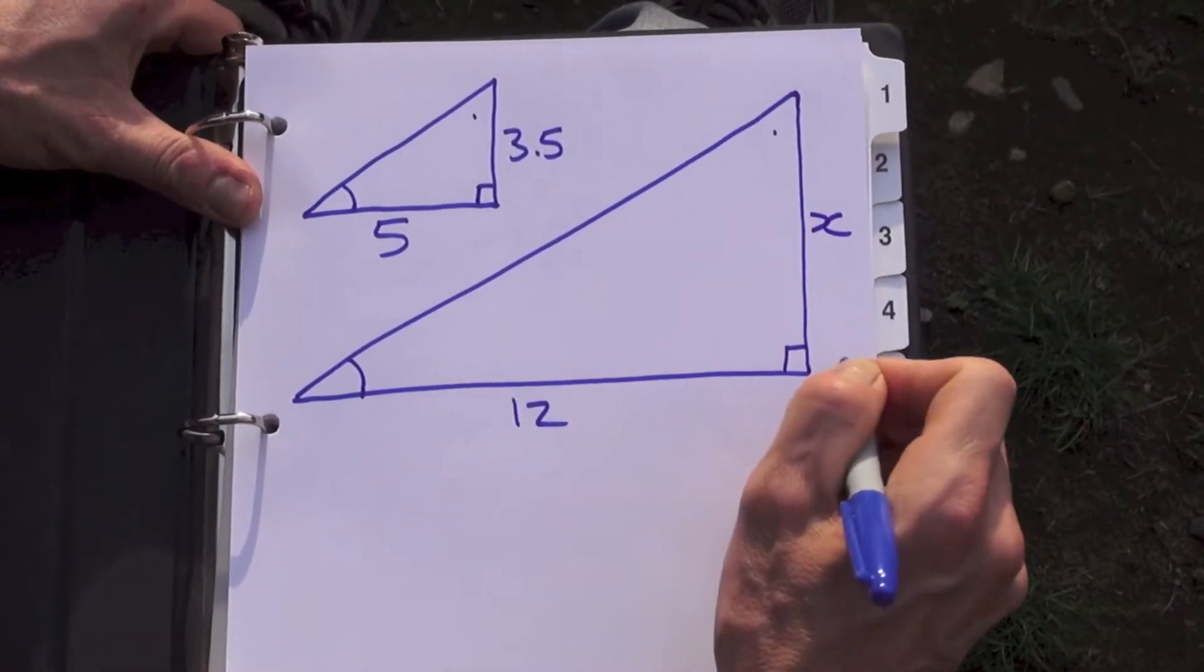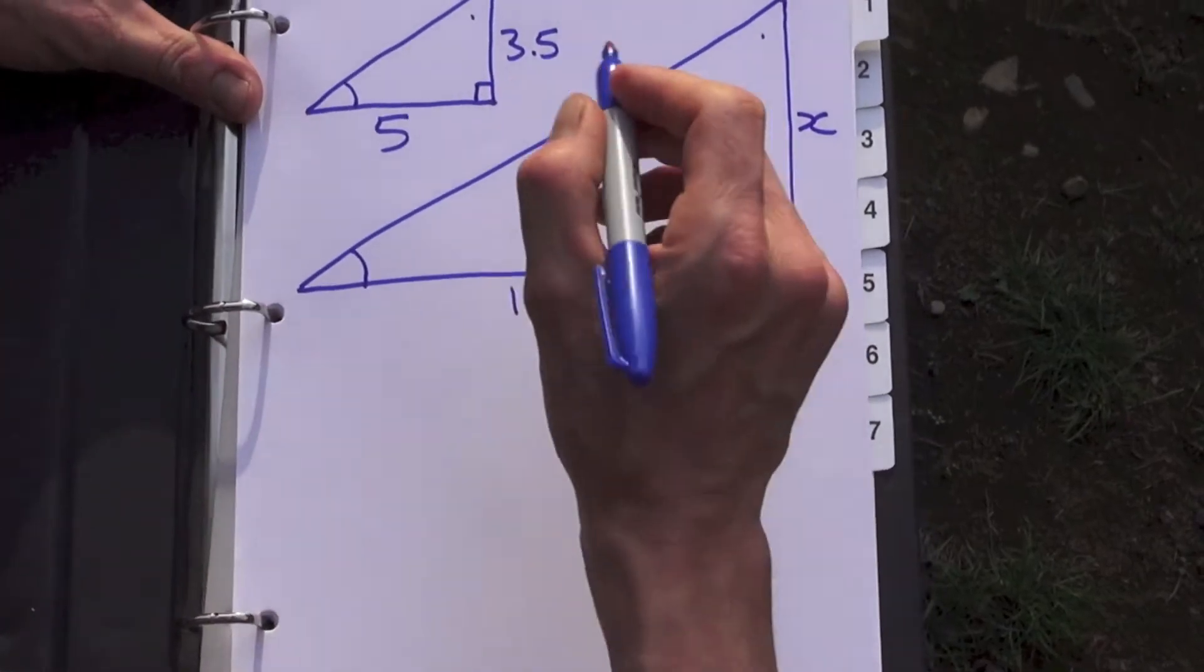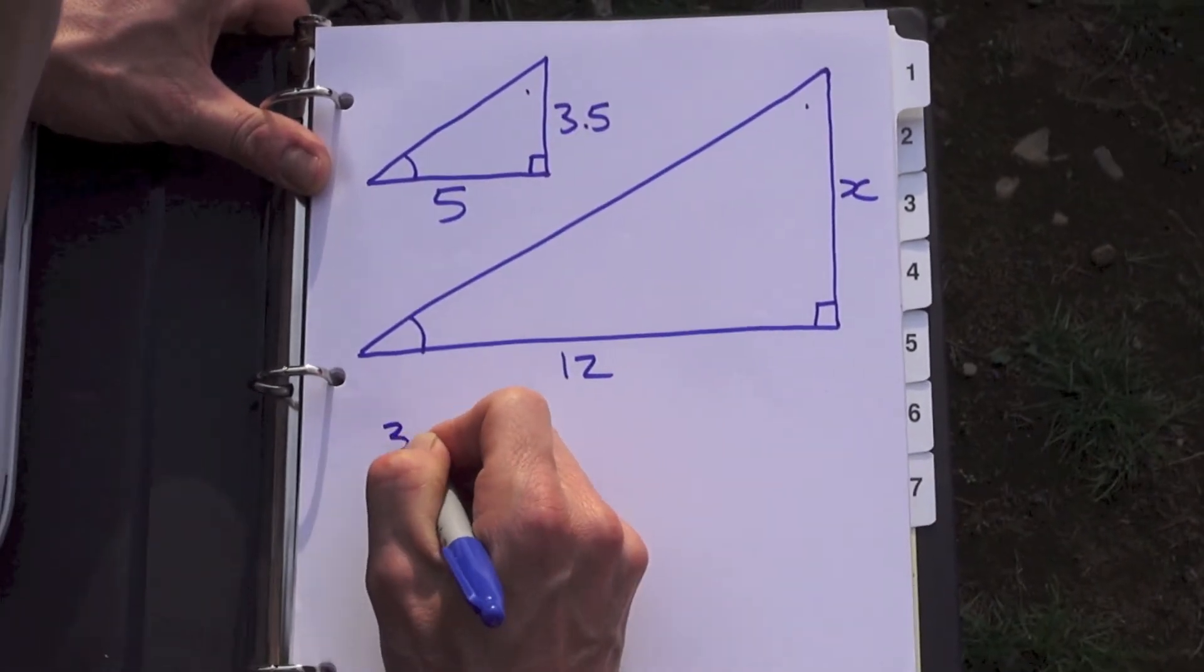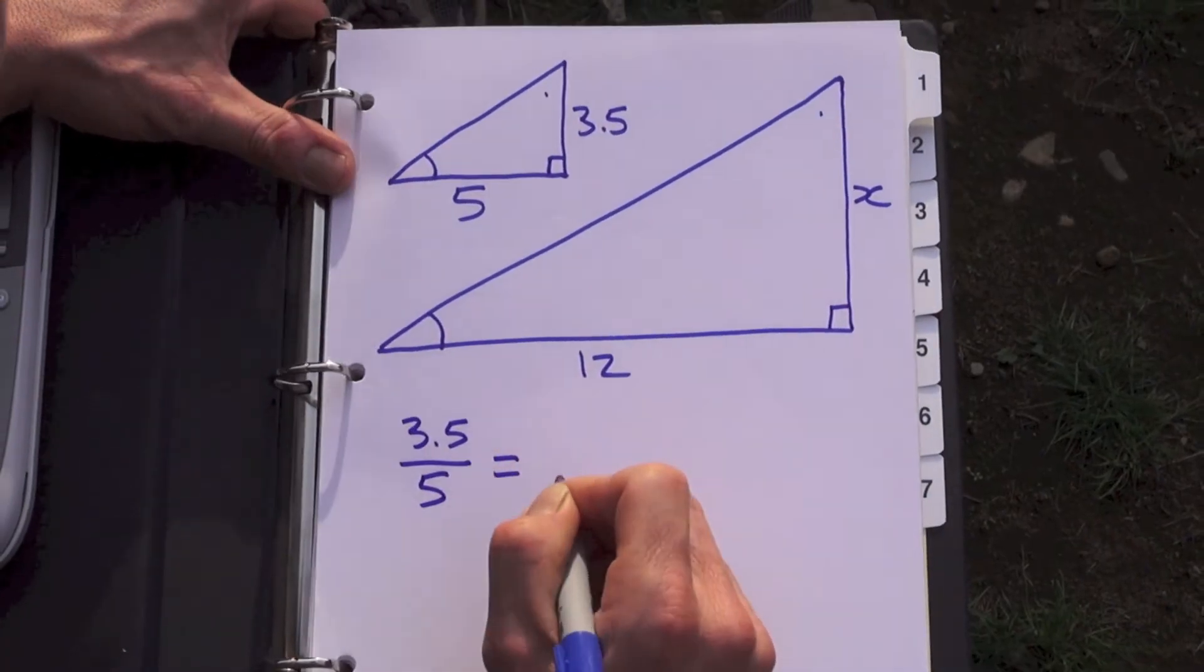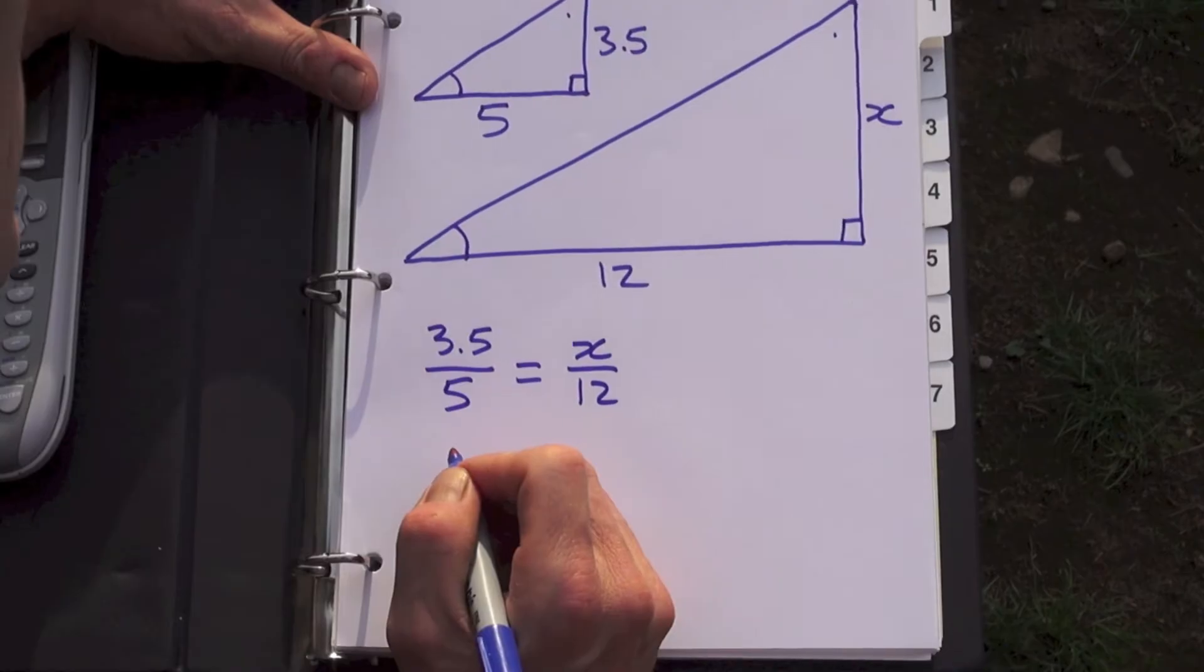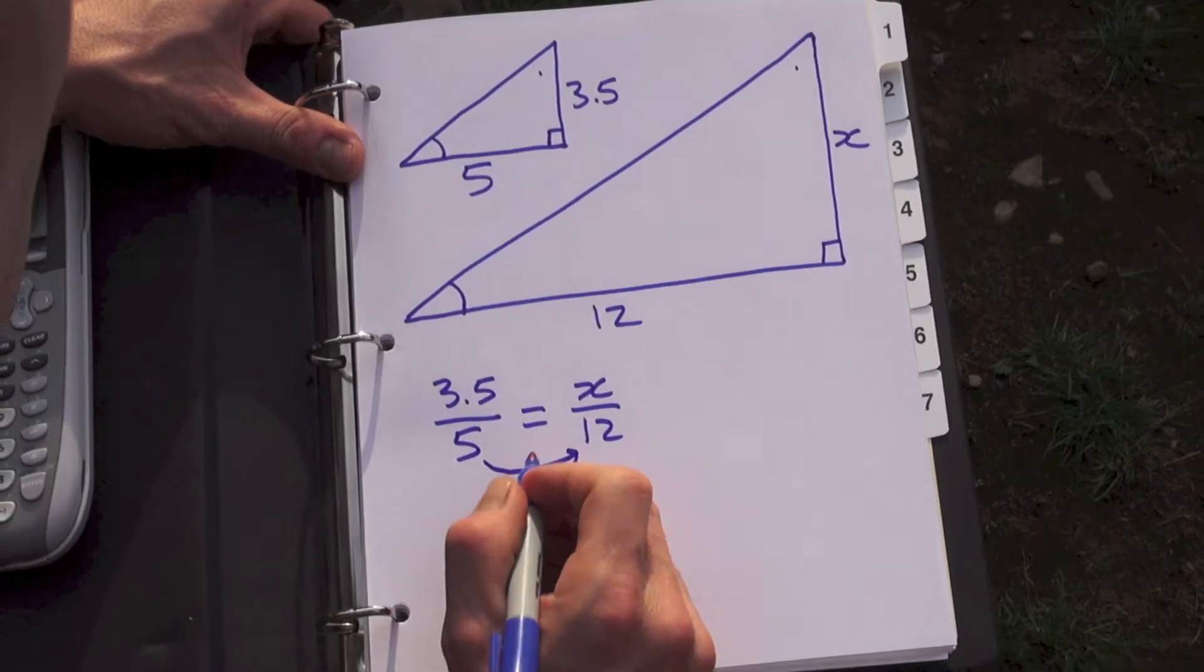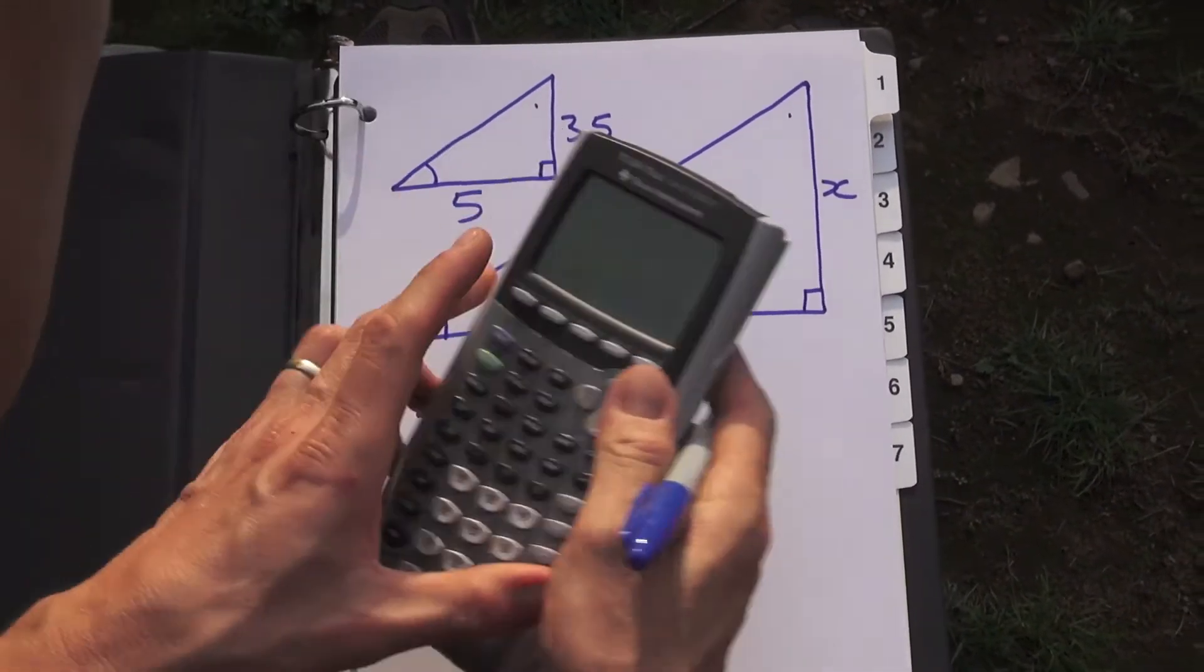That's our unknown, we want to know how high up does that go for 12. We can write a proportion here because a property of similar triangles is that the sides are in proportion. So 3.5 divided by five has to be the same as x divided by 12. Now to figure that out we can just figure out how many times more that is and then use that same factor to multiply there. So we'll get our calculator.